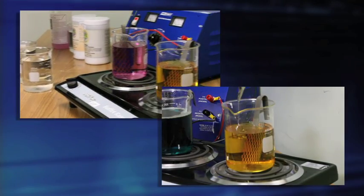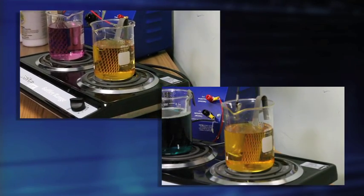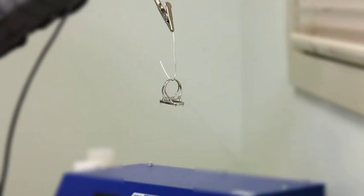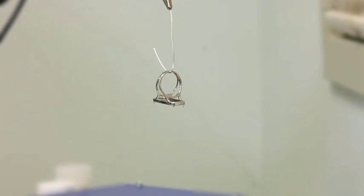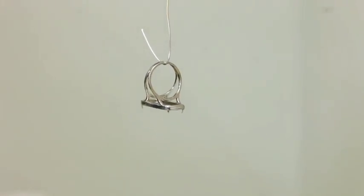Finally, lower the piece into the rhodium at 3 volts for 30 seconds. Once removed from the solution, your jewelry has been rhodium plated to a silver finish.